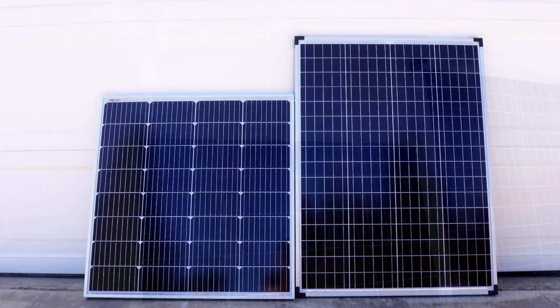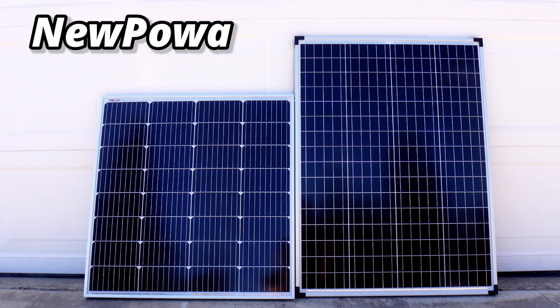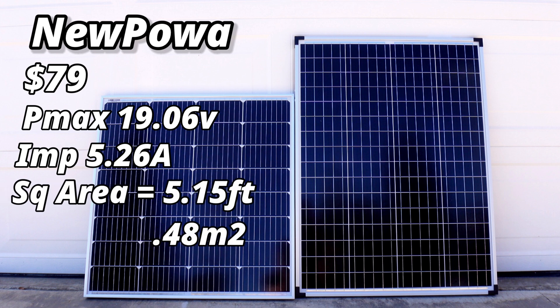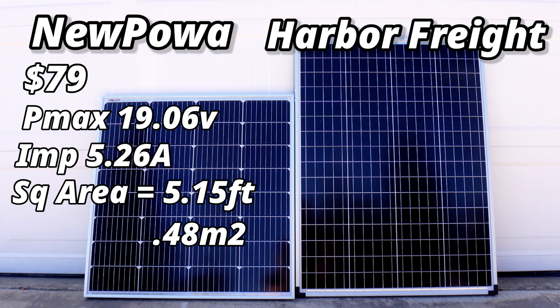The new power solar panel comes in at $79 at the time of this video and has a max P voltage of 19.06 volts and comes in about 5.26 amps, and also has a square area of 5.15 feet or 0.48 meters.